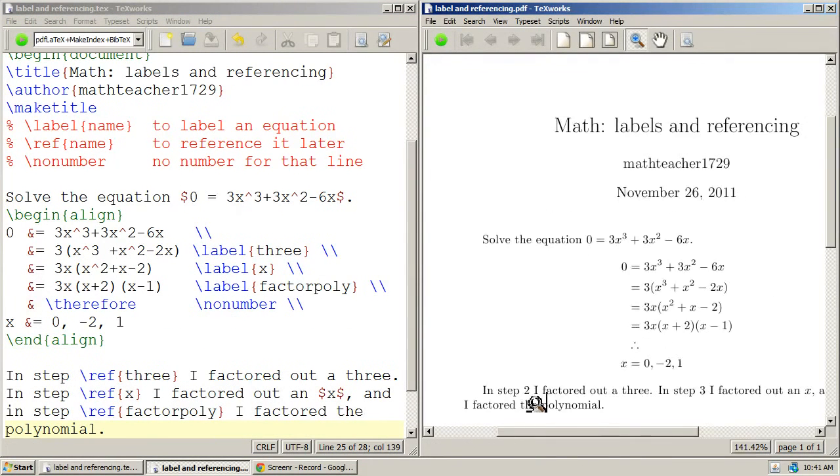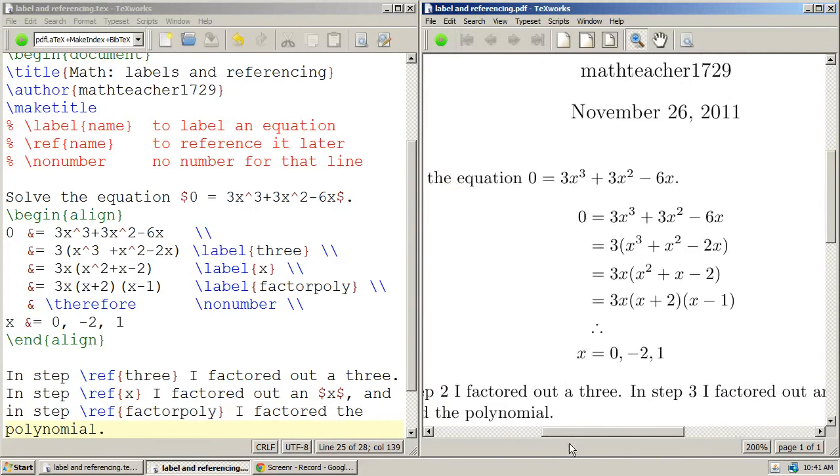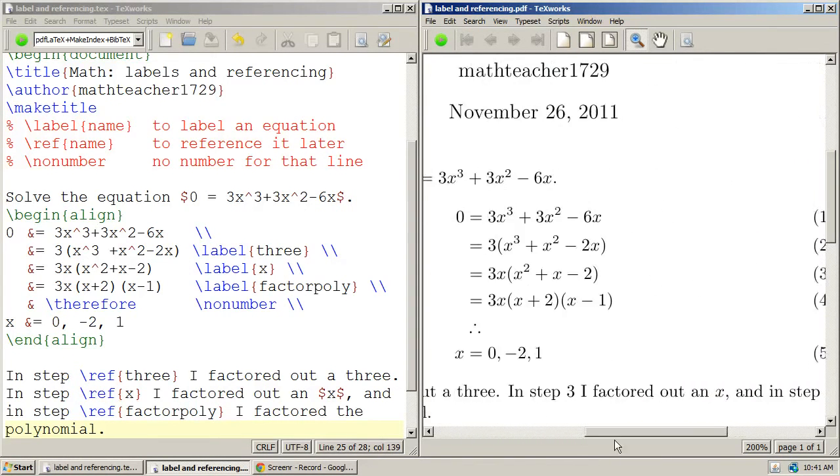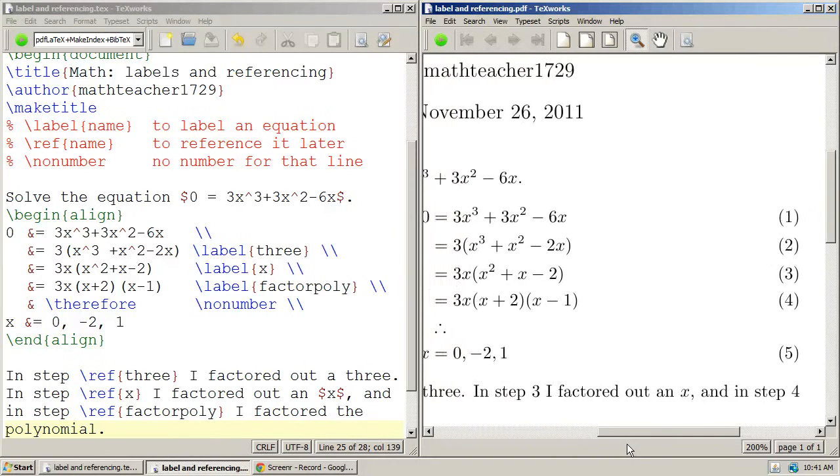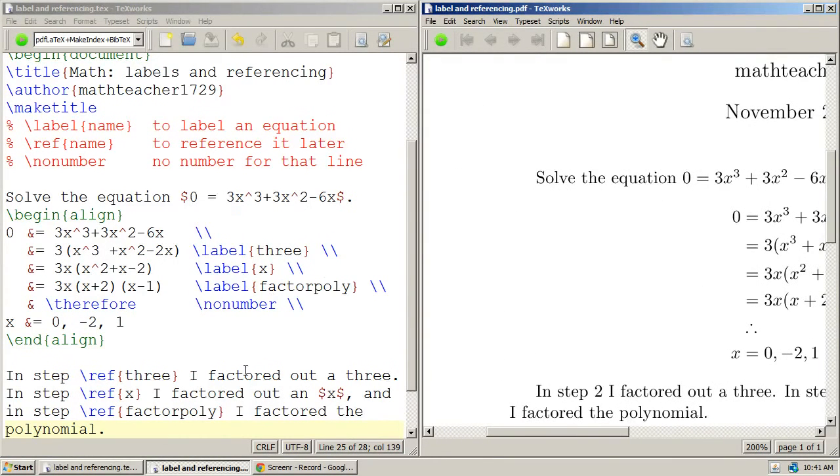In step 2, I factored out... Let's zoom in a little bit more. In step 2, I factored out a 3. In step 3, I factored out an x. And in step 4, I factored out the polynomial. And it's all exactly referenced exactly the way it should be. You don't even have to think about it. You just label it, and it's done.